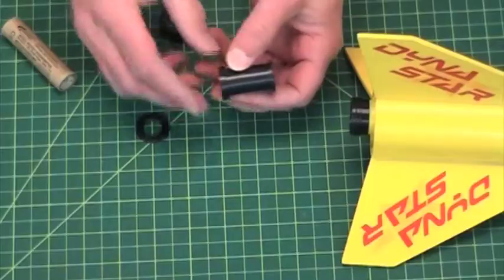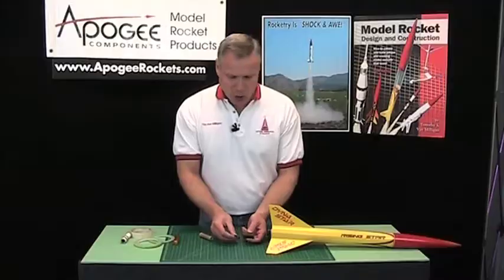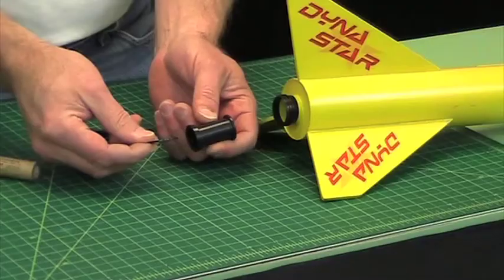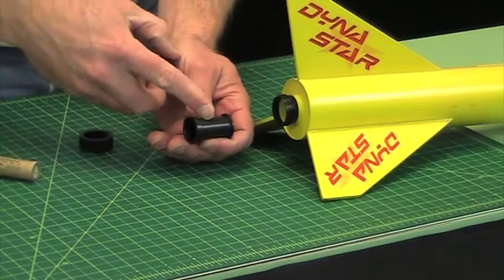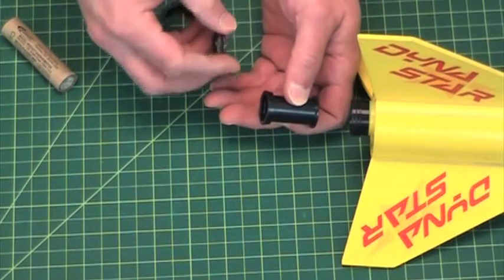There's two types. The first type is the aluminum one and this one is from Rocketerium. This is an 18 millimeter to a 24 millimeter.